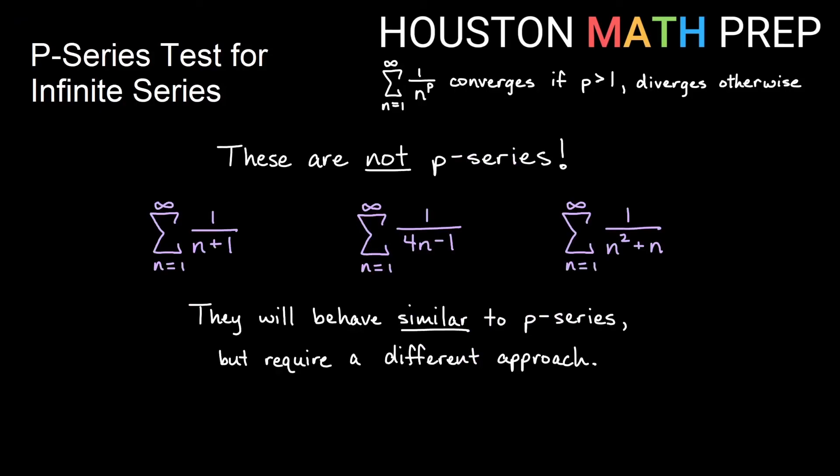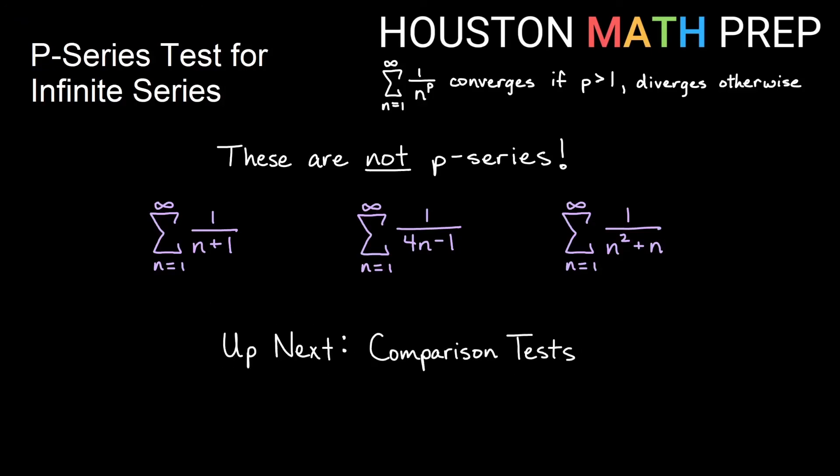We have a few more here that look similar to p-series but are not actual p-series. This addition of 1, this subtraction of 1, this adding another n - these are very similar to p-series. They will behave very similarly, but they require a different approach when we're adding or subtracting additional terms on the bottom. We just want 1 over n to some constant power - that is a p-series. These are not actually p-series. These will need to be compared to p-series, and our comparison tests are coming up in the following videos. Thanks for watching everyone, we'll see you in the next one.